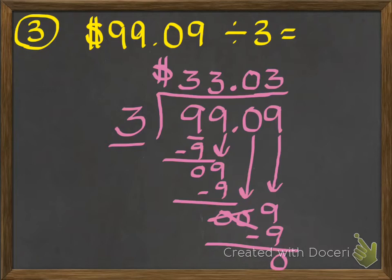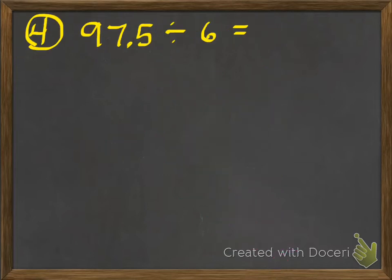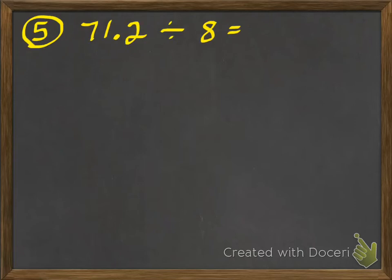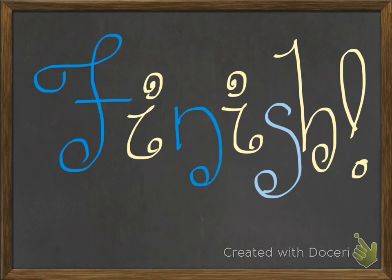I'm going to give you two more problems, and I'm not going to solve them for you — I want you to solve them and then bring your answers, and we'll see in the morning if you got them right. Number 4: 97.5 divided by 6 — write it down, pause the video. Number 5: 71.2 divided by 8. Alright, you are done. Good job! Can't wait to see you tomorrow and talk about all you learned about dividing with decimals. Talk to you later, bye!